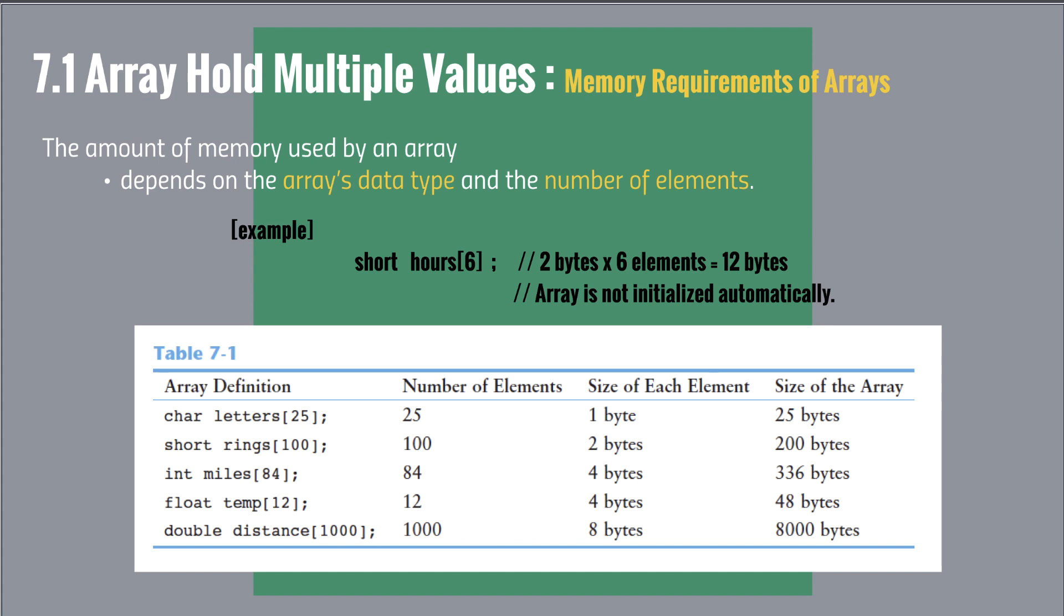The table 7-1 shows more examples when we declare arrays with various types.